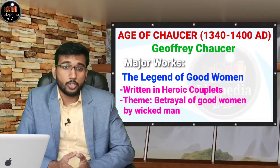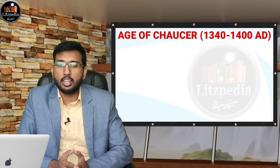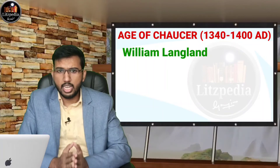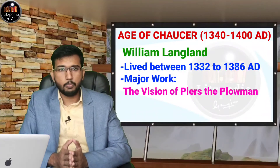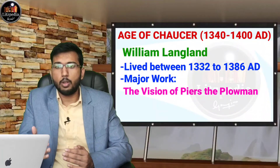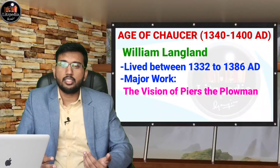Now we should talk about the contemporaries of Chaucer — major writers during the Age of Chaucer. The first writer is William Langland, who lived between 1332 to 1386. His important work is the Vision of Piers the Plowman, which is a series of dramatic visions dealing with socio-spiritual predicament, held together by unity and directness of structure.